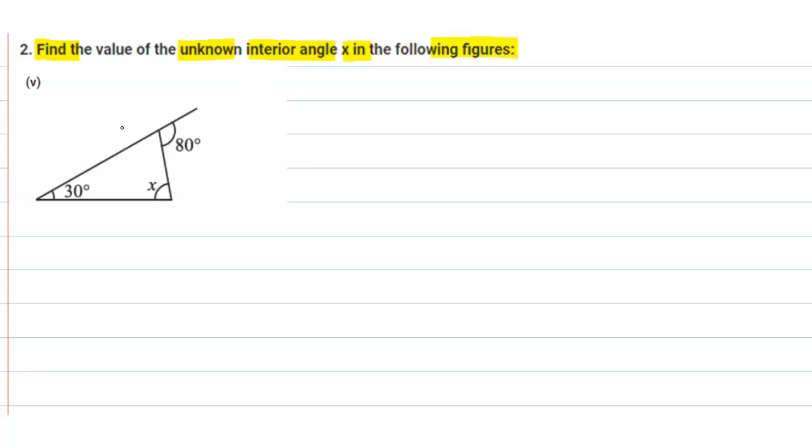Here we have a figure with a triangle. Let us name this triangle ABC and suppose this point is D. So we are given triangle ABC.